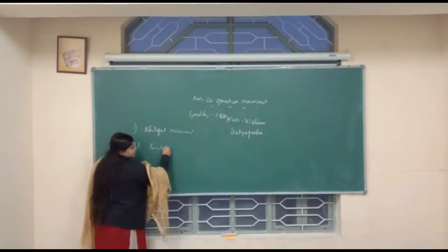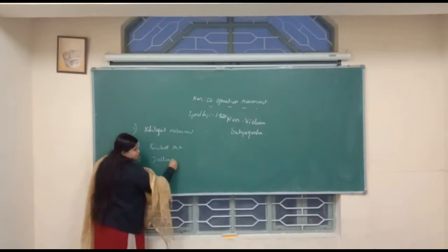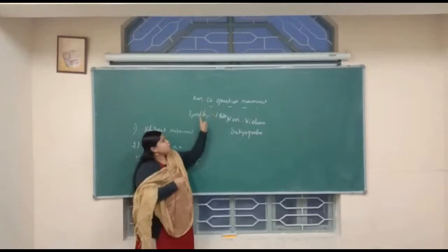The second cause is the Rowlatt Act, and the third cause is the Jallianwala Bagh Massacre. These are the three important causes which led to the Non-Cooperation Movement, which was launched by Gandhiji in 1920.